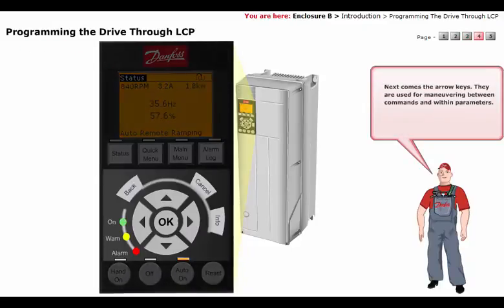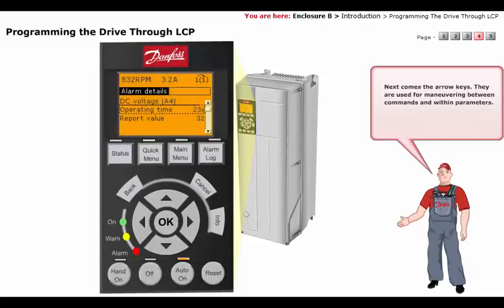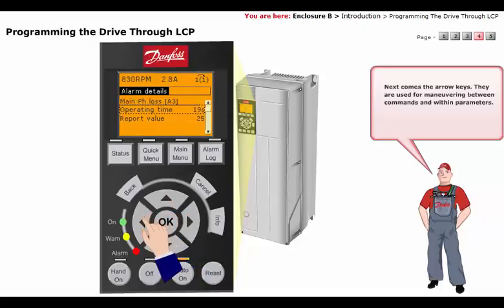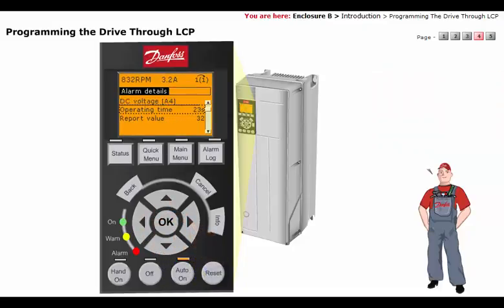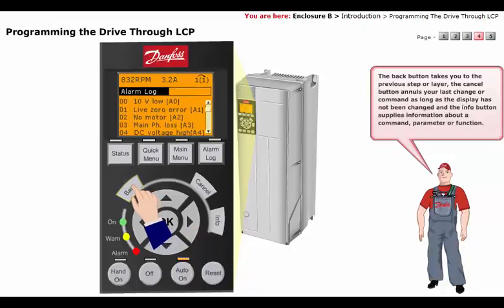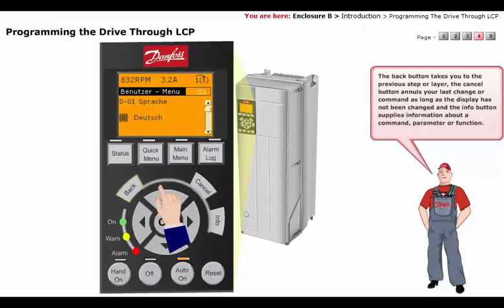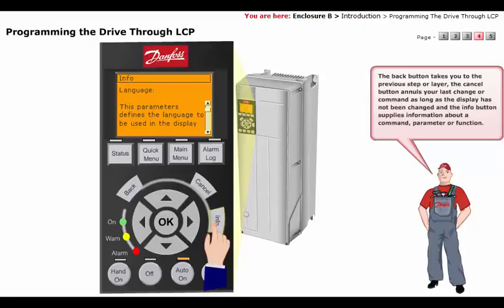Next comes the arrow keys. They are used for maneuvering between commands and within parameters. The Back button takes you to the previous step or layer. The Cancel button annuls your last change or command as long as the display has not been changed. The Info button supplies information about a command, parameter, or function.